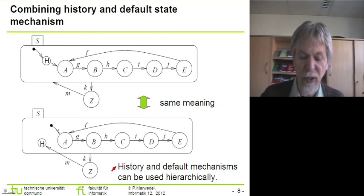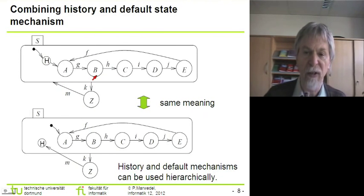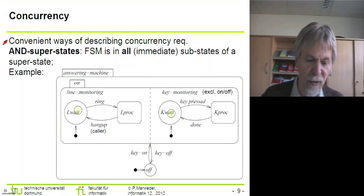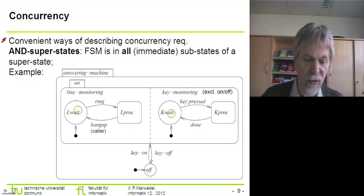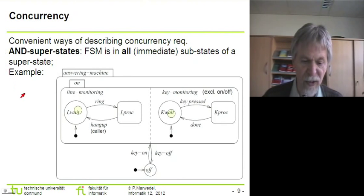History and default mechanisms can be used hierarchically — that means we could have hierarchical states as substates of S, and these in turn could use the history and default state mechanisms. Now with the introduction of hierarchy, we have already solved one of the problems of classical finite state machines. But one important problem that still needs to be handled is the lack of concurrency in standard finite state machines. In order to introduce concurrency, we are extending the set of super states available in state charts, calling these the AND super states. For AND super states, we will be in all of the immediate sub states of the super state at the same time.